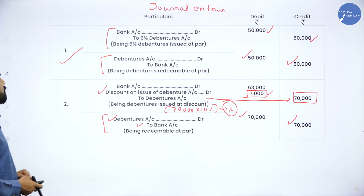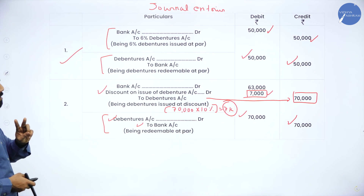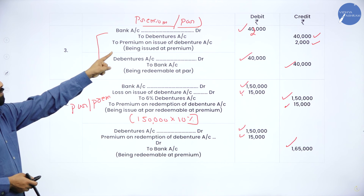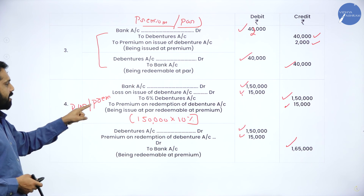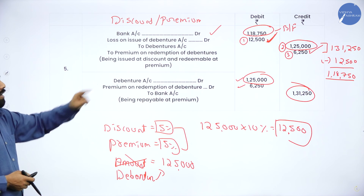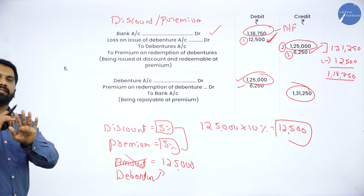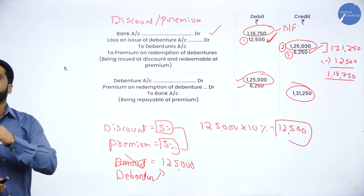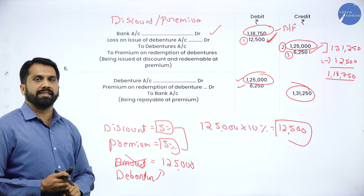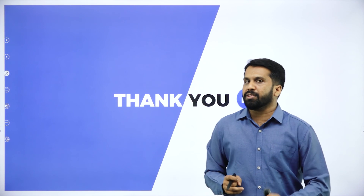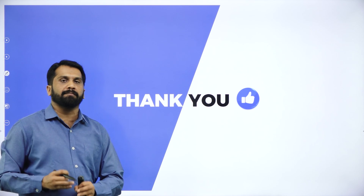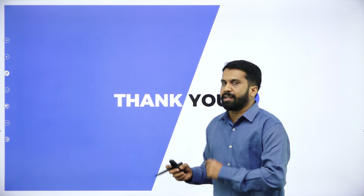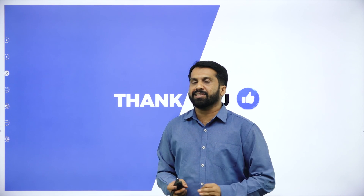I'll revise once. 1st one: issued at par, redeemed at par. 2nd one: issued at discount and redeemable at par. 3rd one: issued at premium, redeemable at par. 4th one: issued at par, redeemable at premium. 5th one: issued at discount and redeemable at premium. 5 types of journal entries are over — other than this, you will not get anything. There is one more 6th one, and sometimes you may get it, but your 12 marks problem is this much only. In the next session, we'll go with one more question paper problem, so that it will be easy for you in your examination — same kind of questions you will get, but numbers will be changed. Thank you.